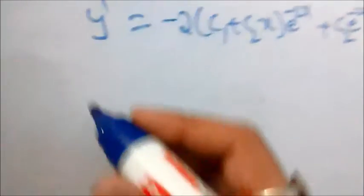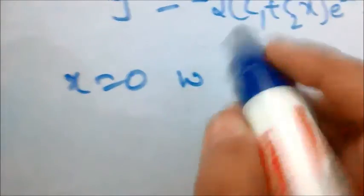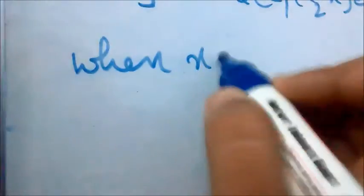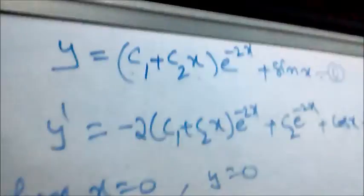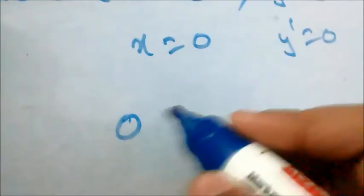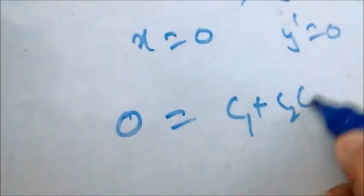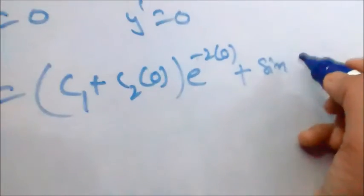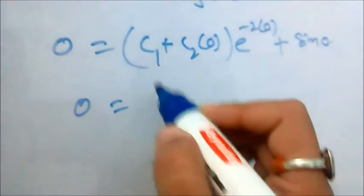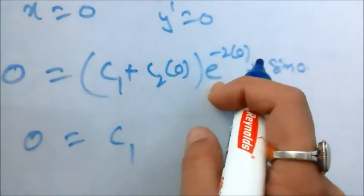Applying x = 0, y = 0 to equation 1: 0 = (c1 + c2·0)·e^(-2·0) + sin(0). Since e^0 = 1, c2·0 = 0, and sin(0) = 0, we get 0 = c1. Therefore c1 = 0.